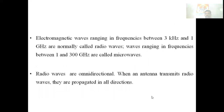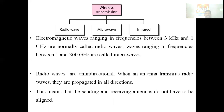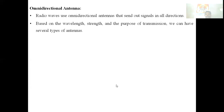Electromagnetic waves from 3 kHz to 1 GHz are called radio waves, and waves from 1 to 300 GHz are called microwaves. Radio waves are omnidirectional — when an antenna transmits radio waves, they propagate in all directions. This means the sending and receiving antennas do not need to be aligned. Radio waves use omnidirectional antennas that send out signals in all directions.